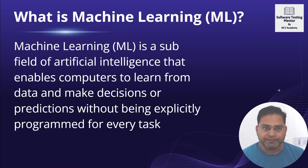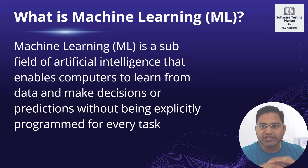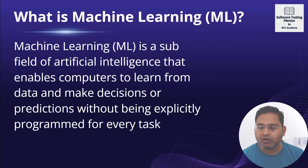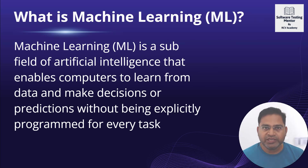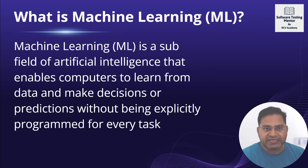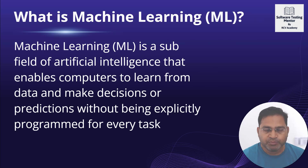Now, what is machine learning? Machine learning is a subfield of AI — artificial intelligence is the umbrella term, and machine learning is a subset of it. It enables computers to learn from data and make decisions or predictions without being explicitly programmed for every task. As human beings, we don't have predefined programming that dictates a fixed output — we learn based on situations, data, and circumstances.